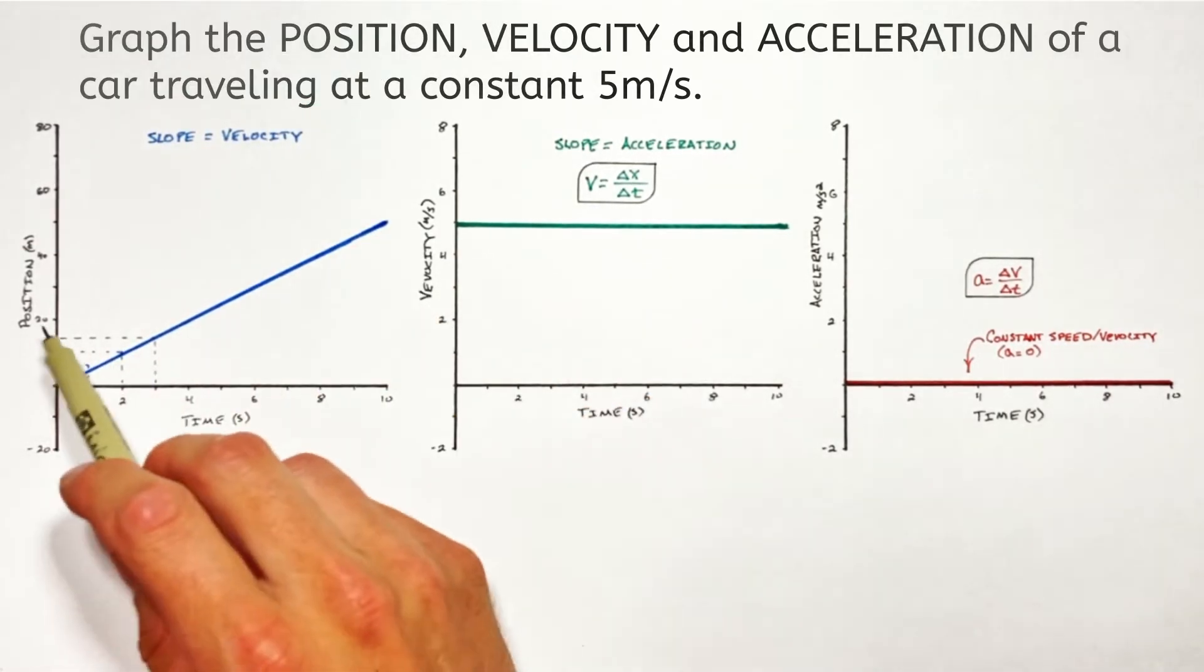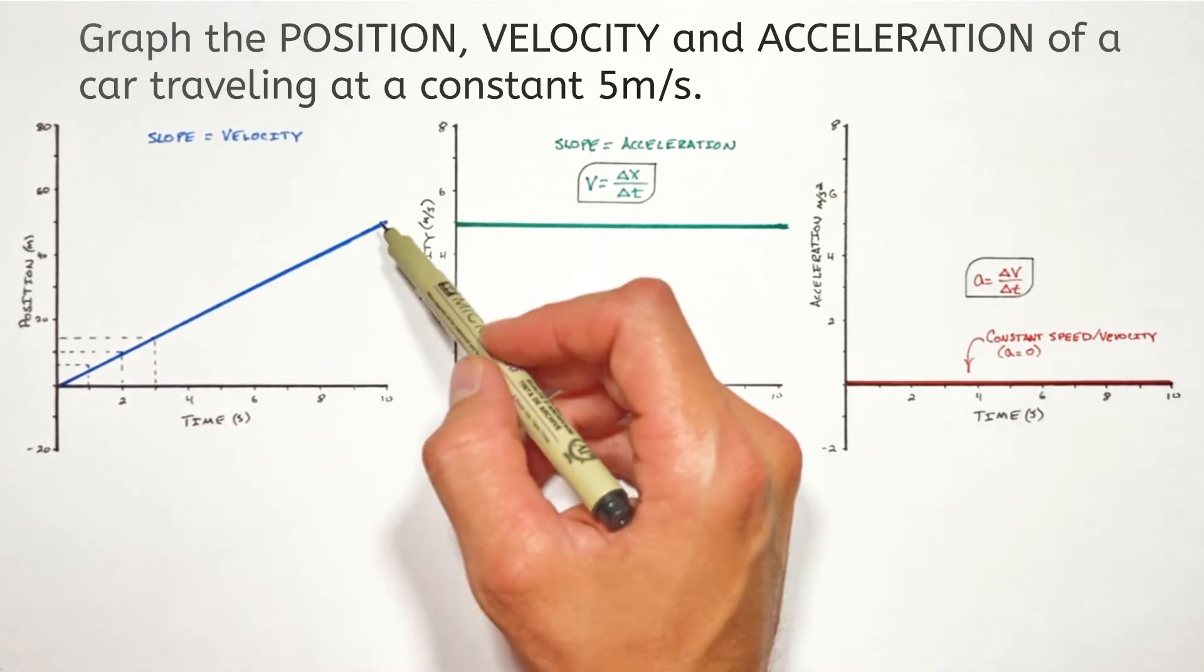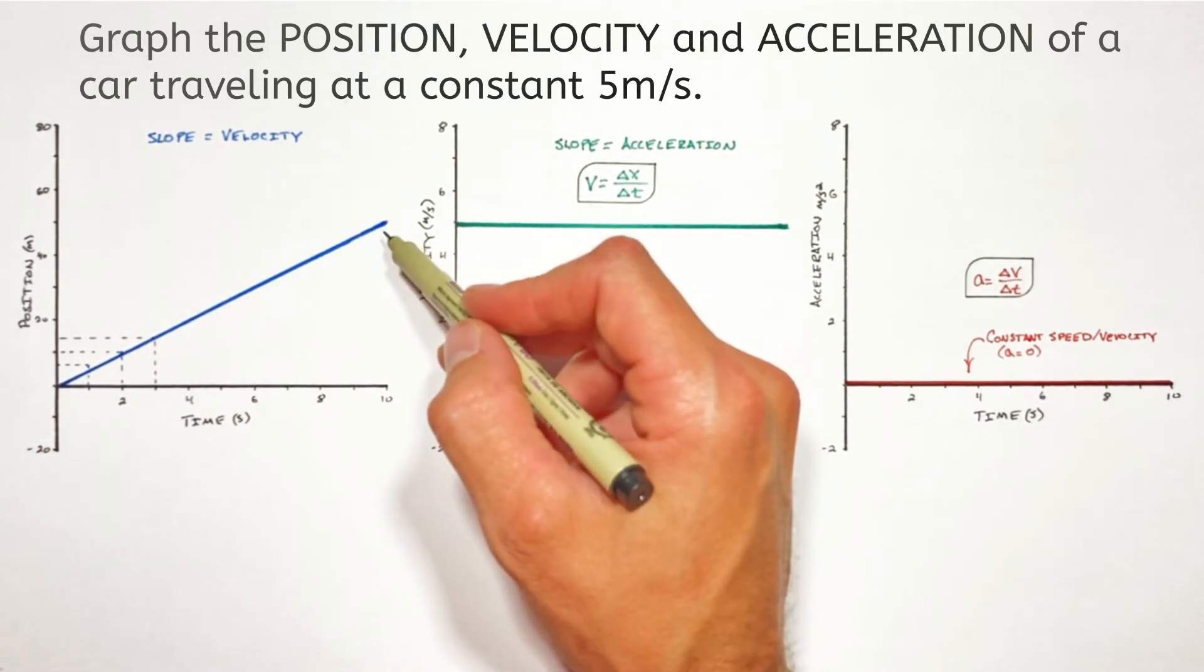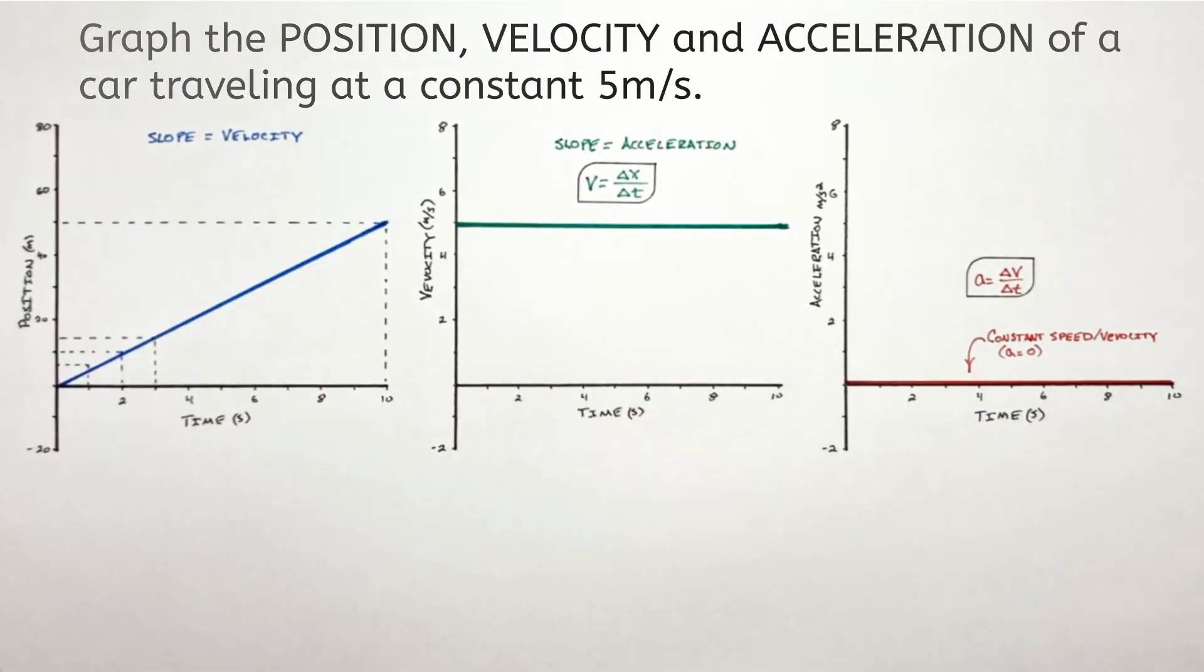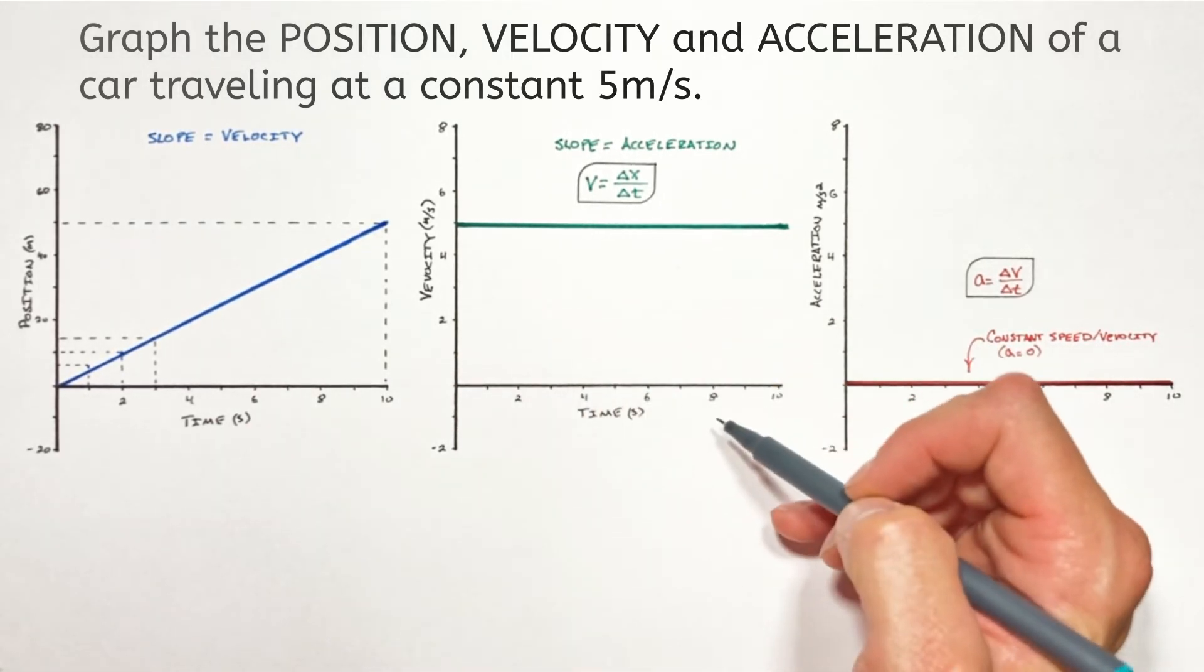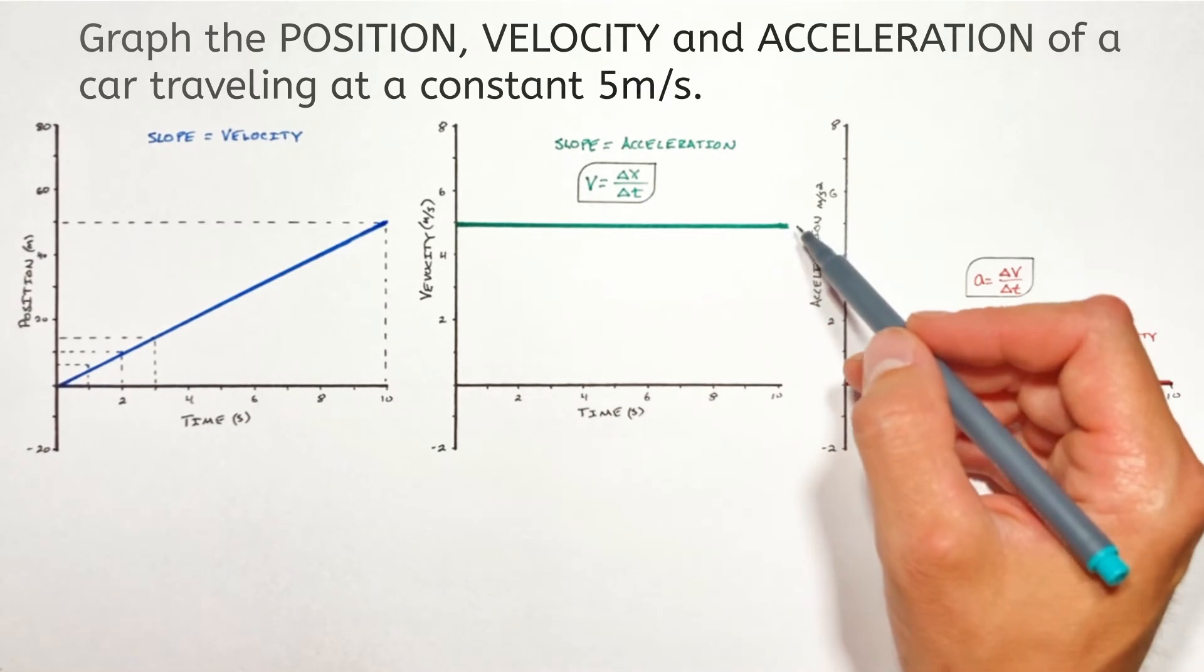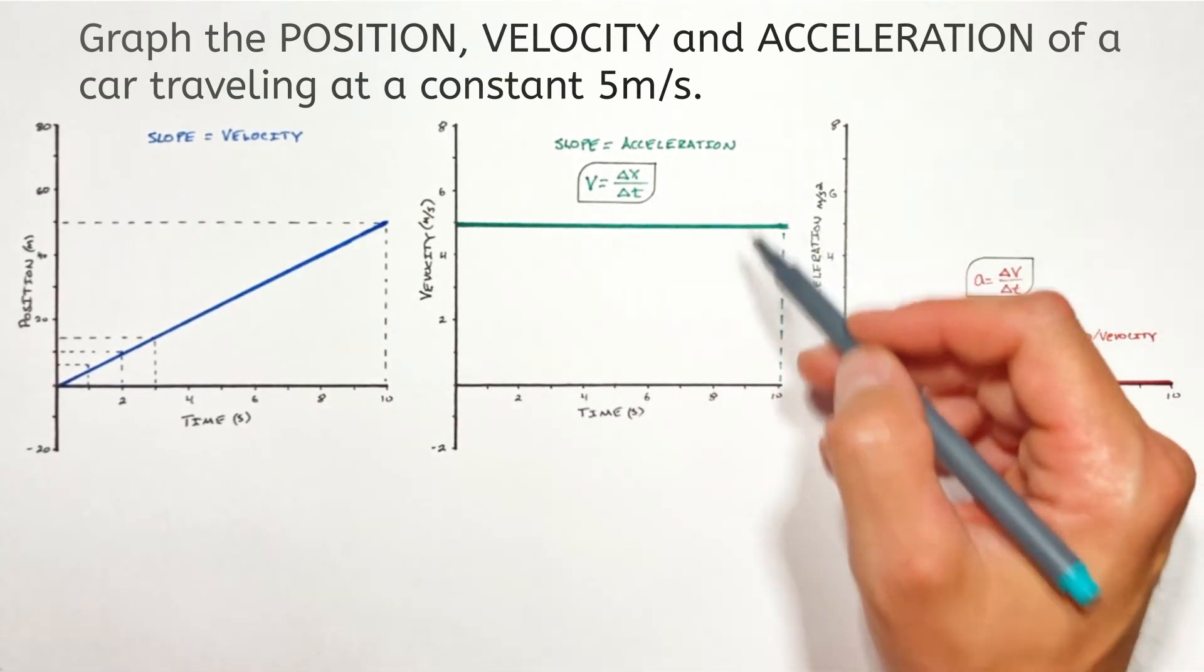Now there's one more relationship between position and velocity that I want to point out. You see, if we look at the position versus time graph, after 10 seconds, our car will have traveled 50 meters. And we can actually determine that from looking at our velocity versus time graph. You see, this line formed on our velocity versus time graph can be viewed as a rectangle. And that rectangle has some area.